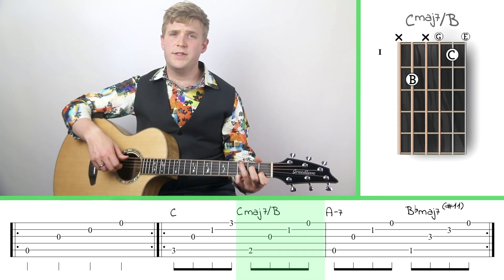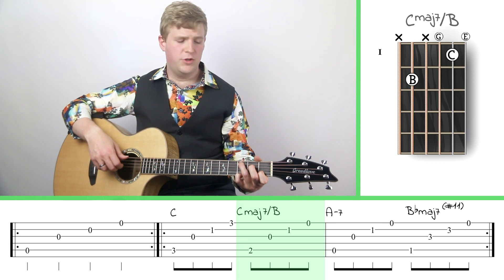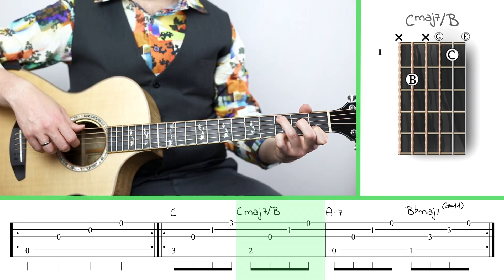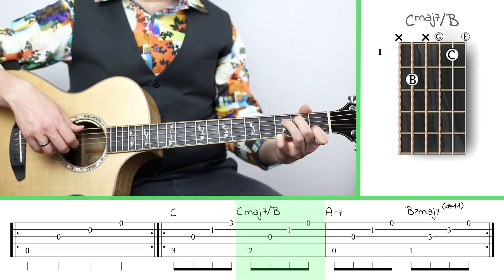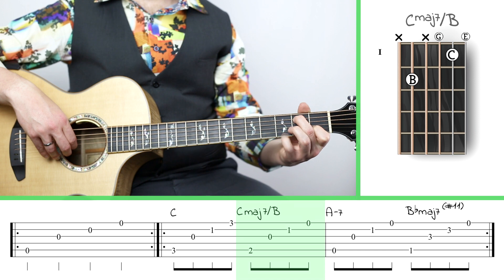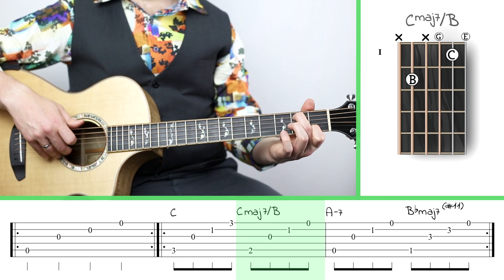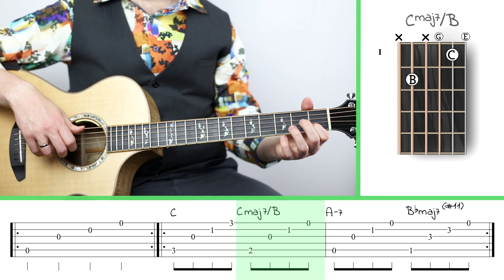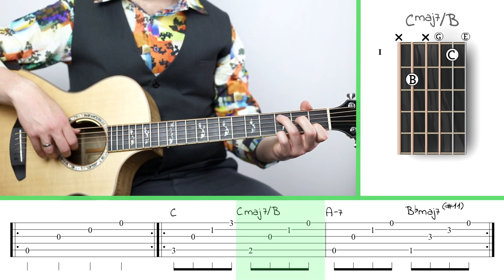The next chord is a C major 7 over B, which means I need to lift up my finger that's doing the third fret here, and I'm going to replace it with my middle finger, which is now on the second fret. I'm also going to lift up my pinky finger. Note that I do keep my index finger rooted on the first fret of the second string the whole time.